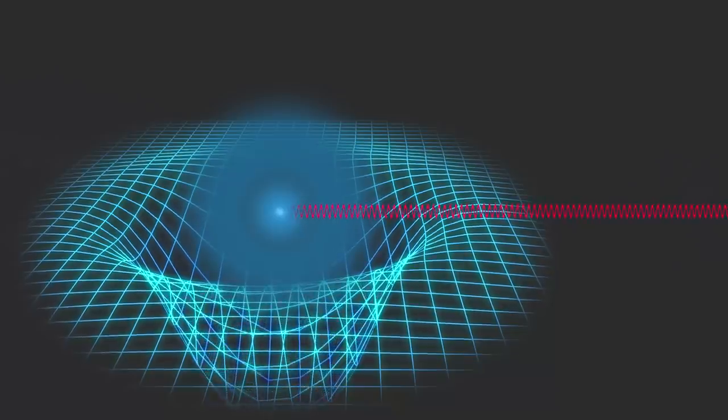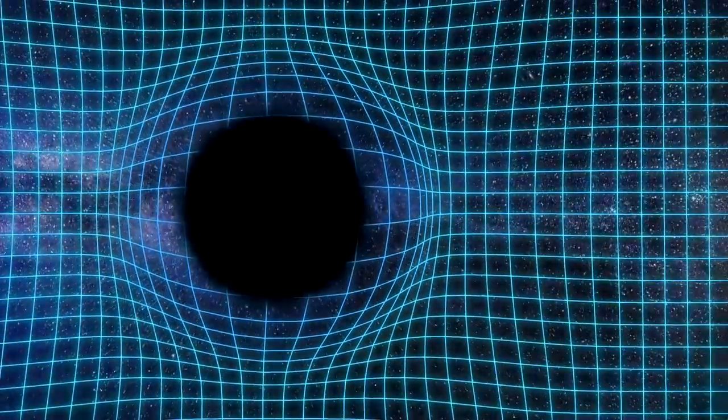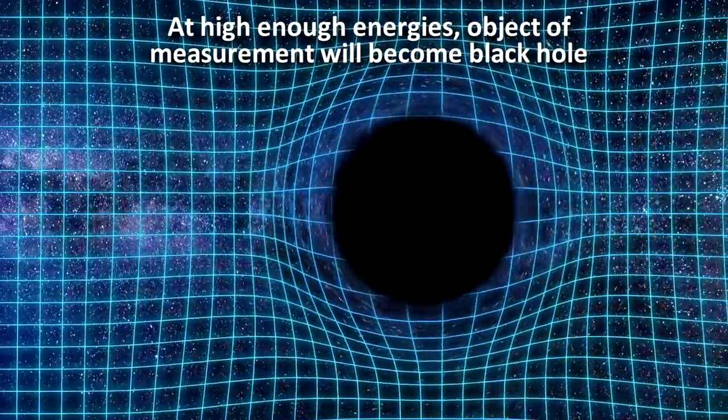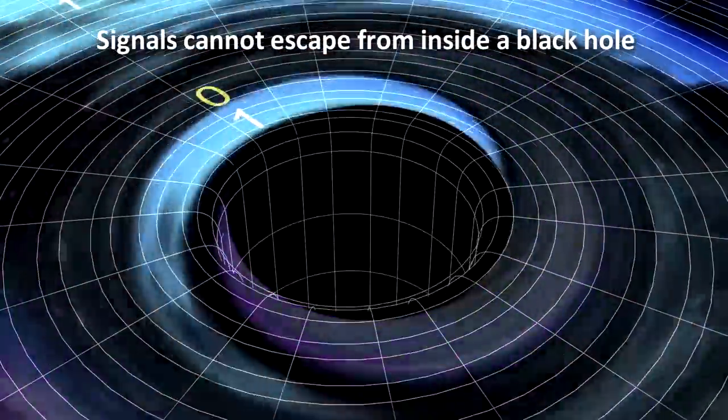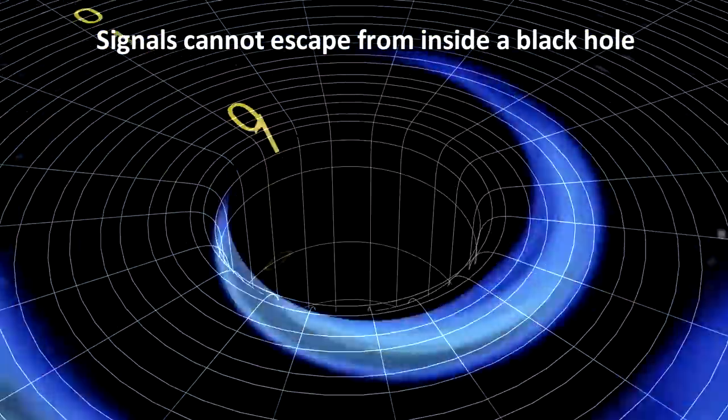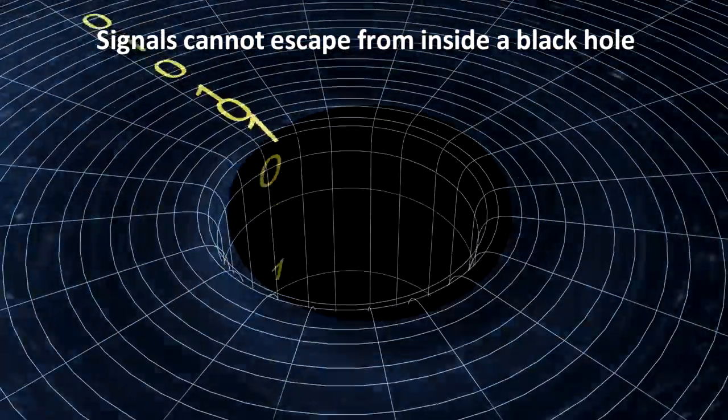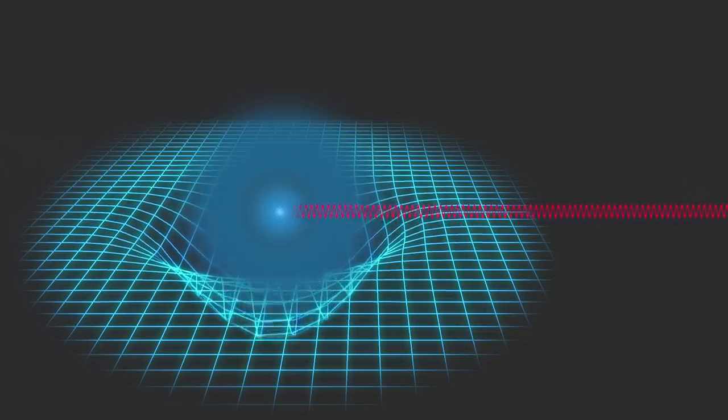And at some point, if the object of our measurement gets small enough, the high energy of our probe will cause such a large curvature that it will create a black hole. And the key feature of a black hole is that no signal can ever escape it. This means that there must exist a shortest distance beyond which it is impossible to perform measurement. That distance is the Planck length.